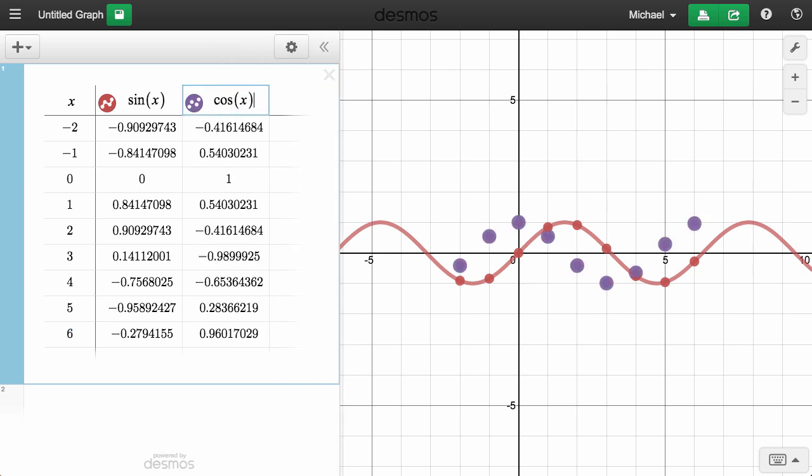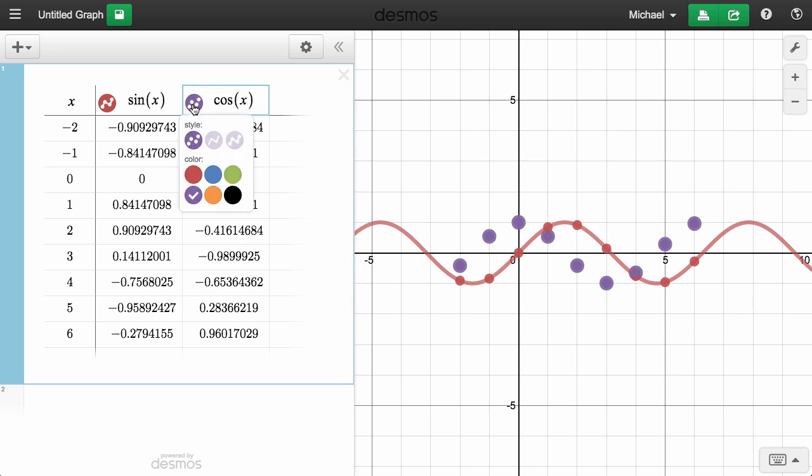Next, click and hold the circle icon to access the style settings. Let's change the style to Line with Dots. Technically it's Curve with Dots here because we're defining this column with a function rather than a list.